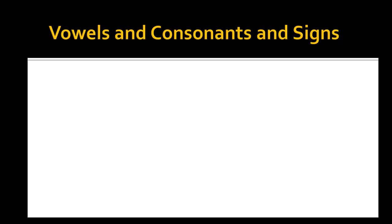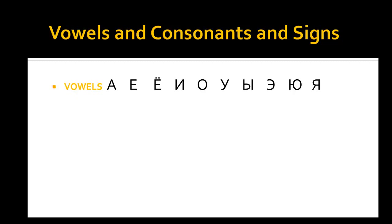The first group are the vowels. There is also a group called signs — the soft sign and the hard sign. The signs do not have a sound on their own, but they make the preceding consonant soft or hard.